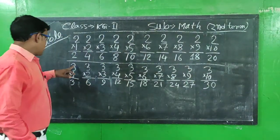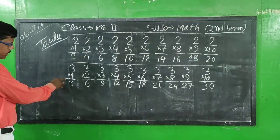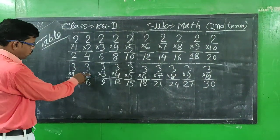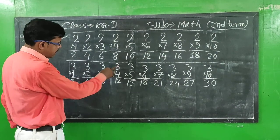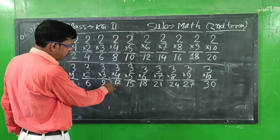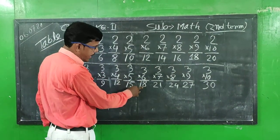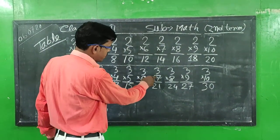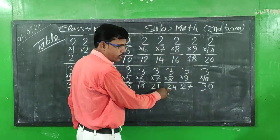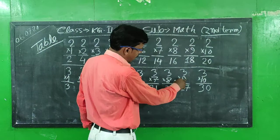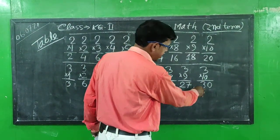Again, table number 3. 3 into 1 is equal to 3. 3 into 2 is equal to 6. 3 into 3 is equal to 9. 3 into 4 is equal to 12. 3 into 5 is equal to 15. 3 into 6 is equal to 18. 3 into 7 is equal to 21. 3 into 8 is equal to 24. 3 into 9 is equal to 27. 3 into 10 is equal to 13.